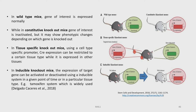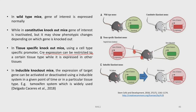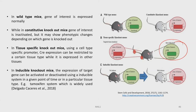In tissue-specific knockout mice, using a cell-specific promoter, Cre expression can be restricted to a certain tissue type while it is expressed in other tissues. In such mice, the gene of interest will not be expressed only in the particular tissue in which the Cre expression is restricted. But in the rest of the body the gene of interest will be functional. Such a mouse is known as a tissue-specific knockout mouse.